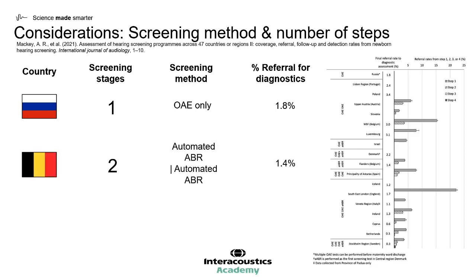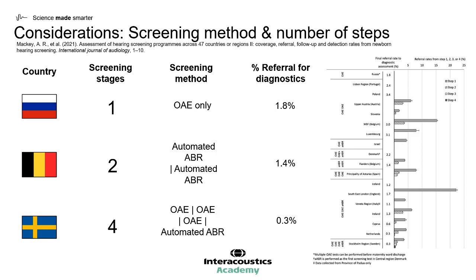The Belgium approach uses a two-step automated ABR test, and adding this second layer reduces the referral rate to diagnostics to 1.4% for Belgian babies. In the Stockholm region of Sweden, they perform otoacoustic emissions, followed by otoacoustic emissions again, followed by otoacoustic emissions a third time, and then lastly an automated ABR. This robust multi-step approach results in very few babies being referred to diagnostic audiology — just 0.3%. This demonstrates that screening method and number of steps has a significant impact on the referral rate.